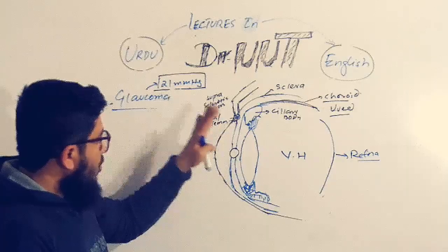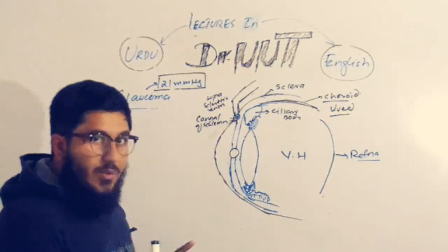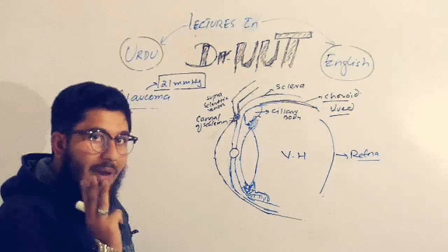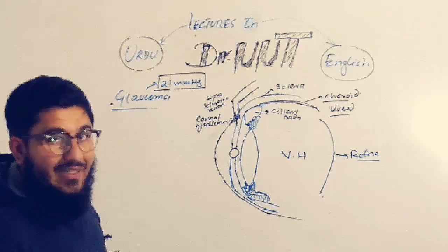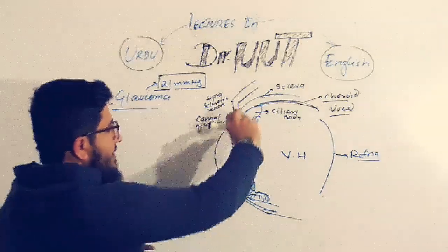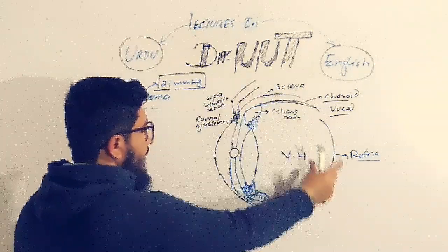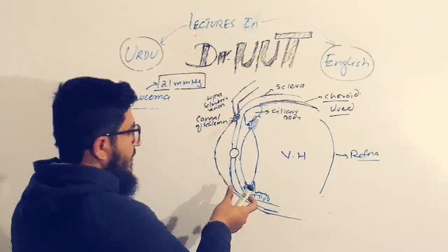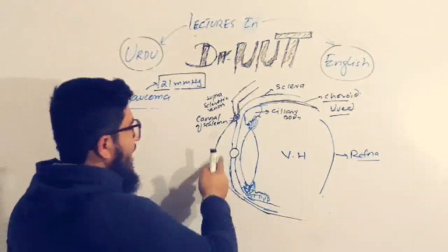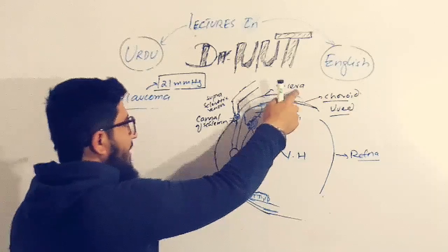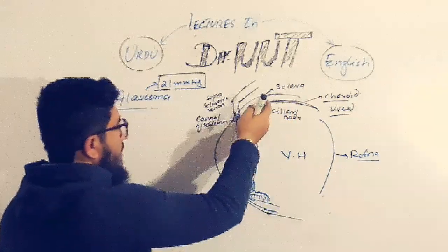The eye is composed of three major coats or layers. The very first, the outermost layer, gives shape and covering to the eye. This layer is called the sclerotic layer.